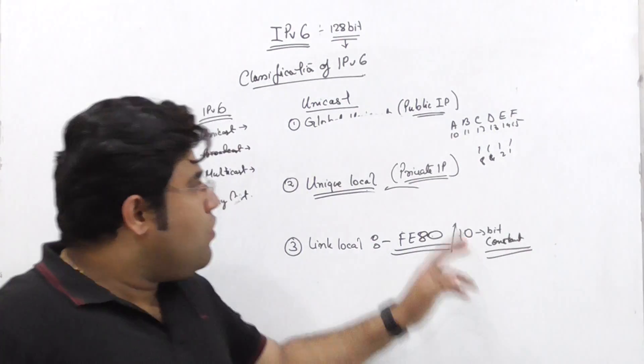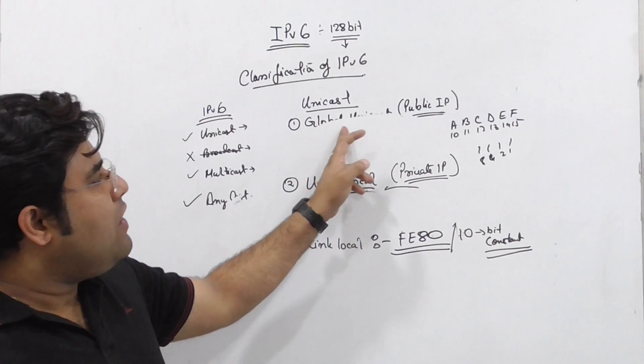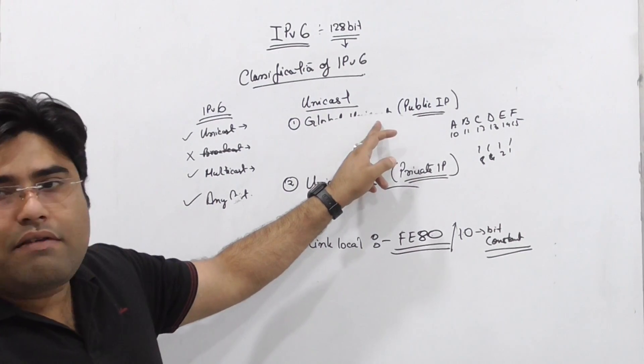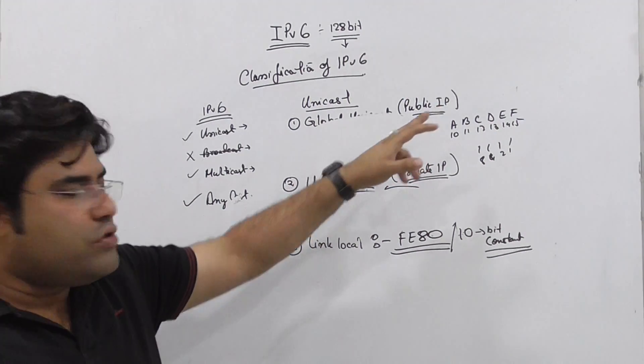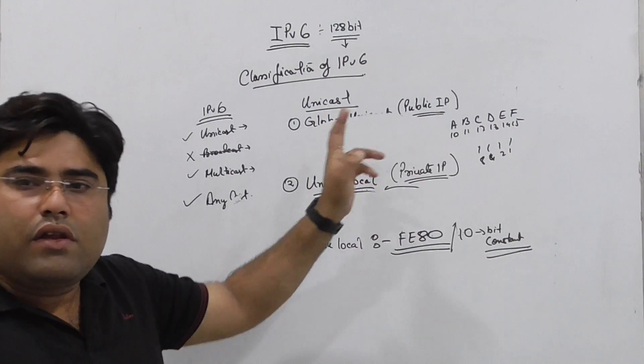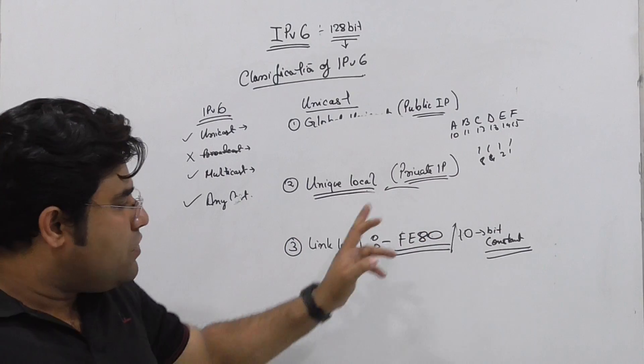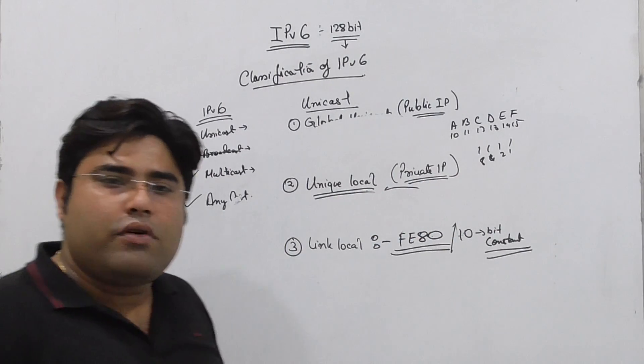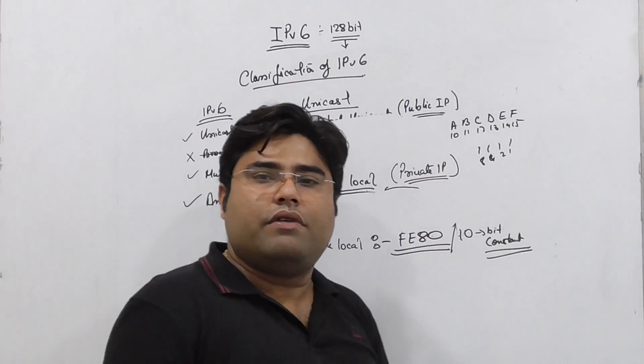You have to communicate with the global unicast address, with the unique local address, and with the link local address for your communication.